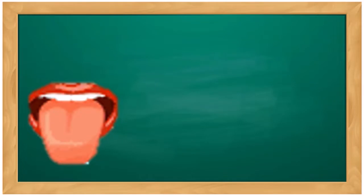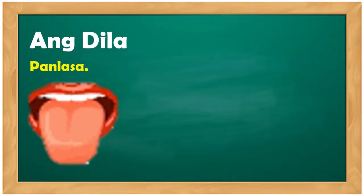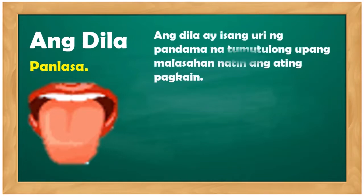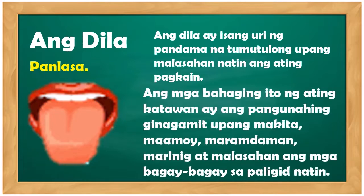Ang ating dila o bibig ay ginagamit sa panlasa. Nalalasahan natin ang ating kinakain sa pamamagitan ng ating dila. Ang dila ay isang uri ng pandama na tumutulong upang malasahan natin ang ating pagkain. Ang mga bahaging ito ng ating katawan ang pangunahing ginagamit upang makita, maamoy, maramdaman, marinig, at malasahan ang mga bagay-bagay sa paligid.